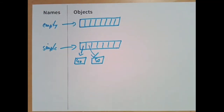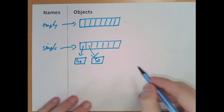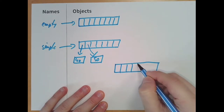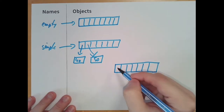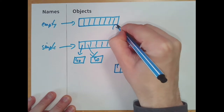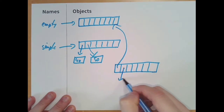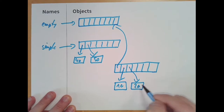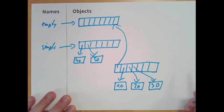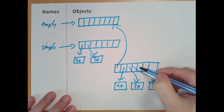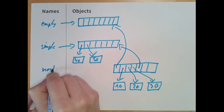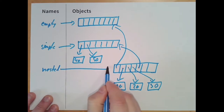Then to end the list we put a reference to the simple list above. What happened in memory? We create another list object. The first reference is a reference to the empty list. Then references to the numbers 10, 20, and 30. The fifth reference at index 4 is a reference to the simple list. This list has a name in the global scope — we call it nested.